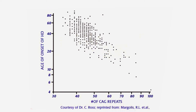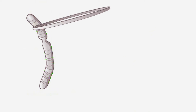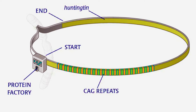People with 36 to 41 repeats may not ever show signs of disease, while a person with 50 or more repeats usually shows signs before age 20. An excess of CAG repeats in the gene changes the shape of the protein produced from the gene.